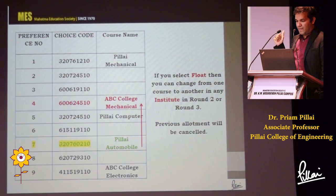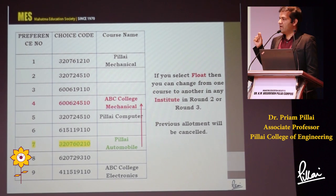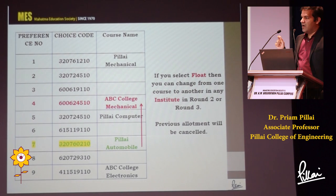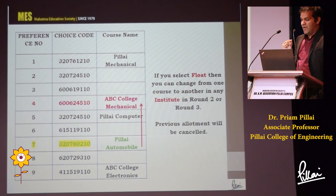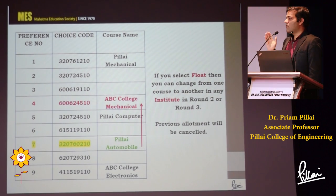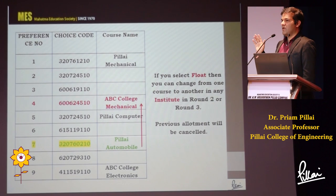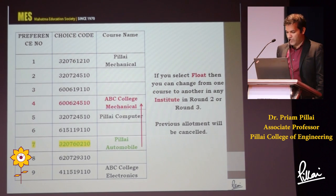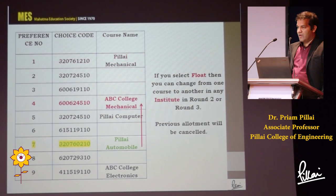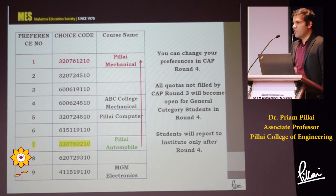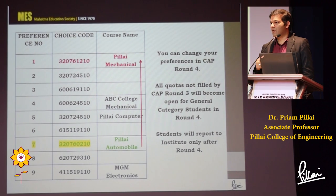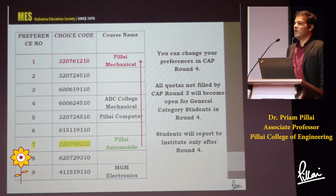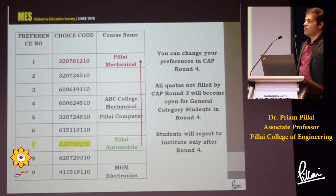So that's freeze, slide, and float. This will go on for rounds two and three. The option form you filled out before the first round will continue for round two and round three. Round four is a special round — the whole scenario changes because you can actually change your options and change your order of preferences, allowing you to continue to improve your choice of college and course.